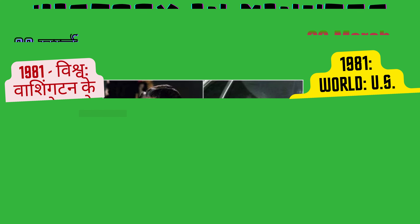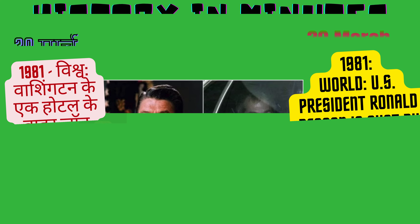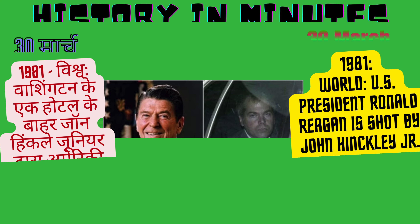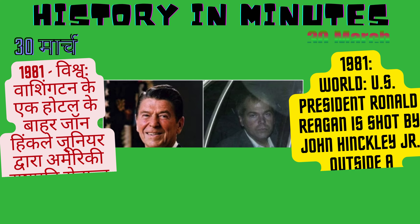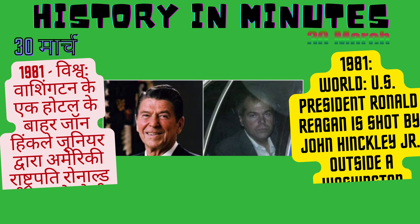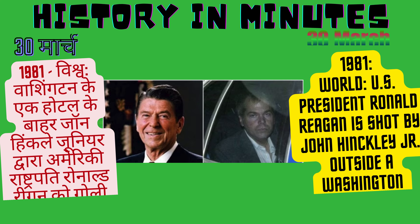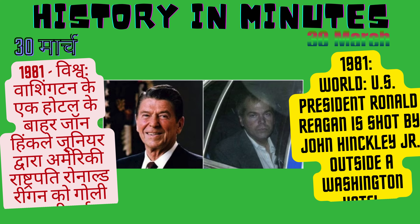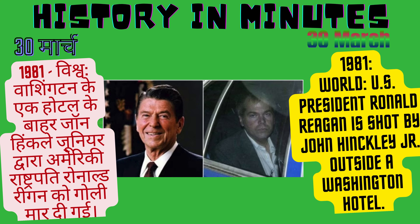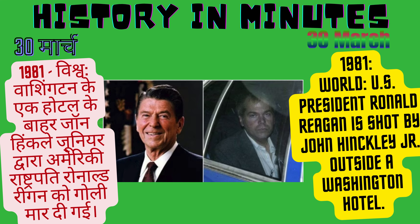1981: World — U.S. President Ronald Reagan is shot by John Hinckley Jr. outside a Washington hotel. (Hindi: Vishwa Washington ke ek hotel ke bahar John Hinckley Junior dwara Amriki Rashtrapati Ronald Reagan ko goli maar di gai.)